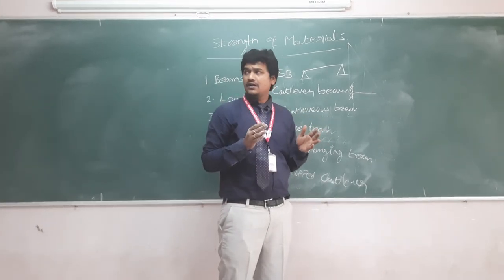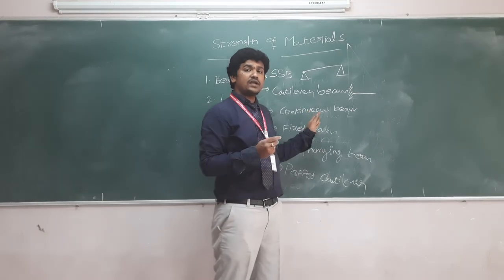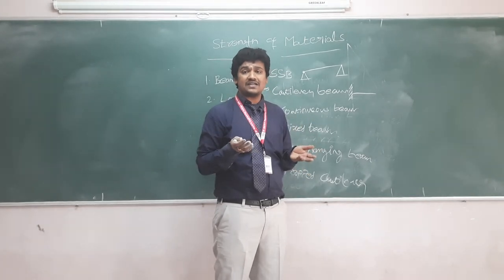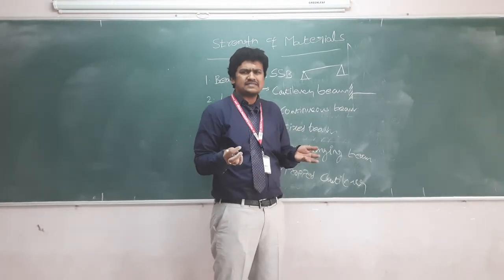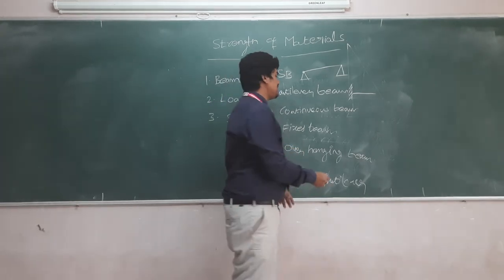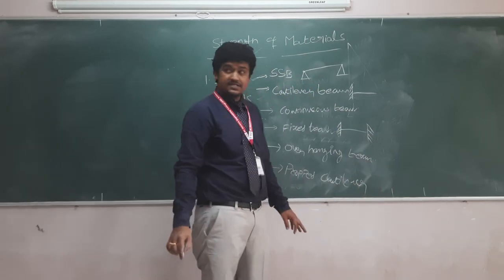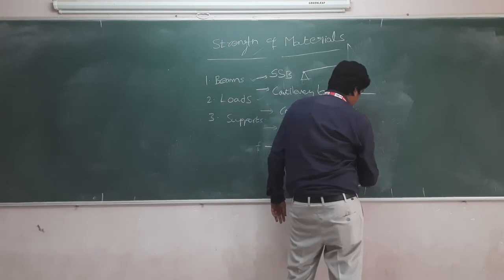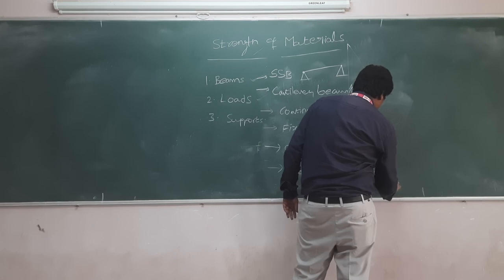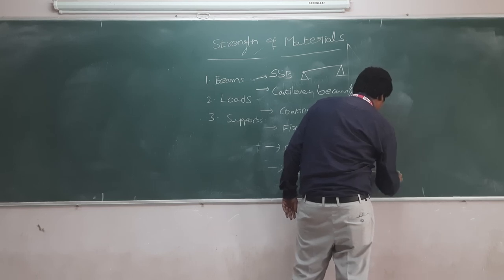If the number of supports is three or more, then that particular beam can be called a continuous beam. All large-scale commercial or residential structures such as apartments and school buildings are examples of continuous beams. Fixed beam means a beam which is fixed at both ends.